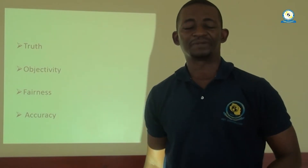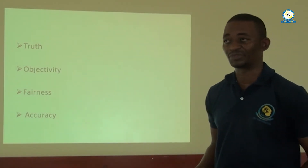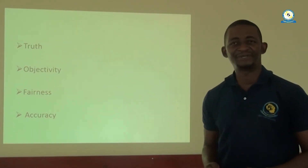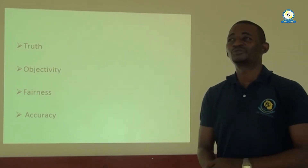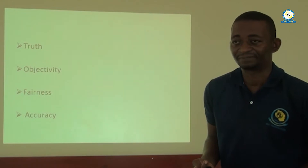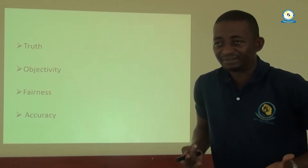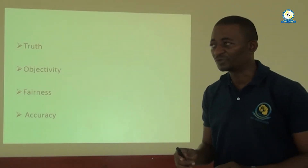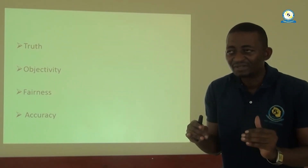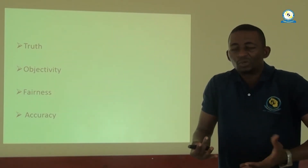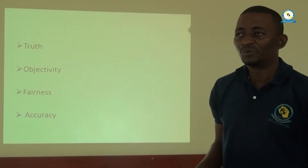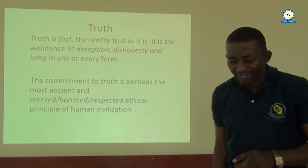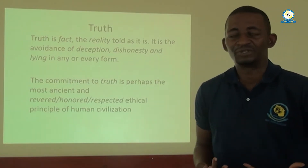Let us start with truth. What do we mean when we say journalists should abide by truth? When we talk of truth, we refer to the facts — it's a kind of reality told as it is. We are trying to avoid any kind of deception, dishonesty, or lying in every form. Journalists must be committed to the truth. Commitment to the truth is the fundamental core objective of any journalist.